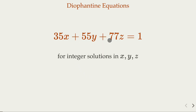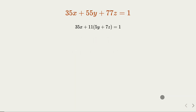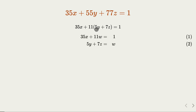Now let's go back to our problem with three variables and introduce three different methods. In the first method, we're going to split this into two equations. Looking at the equation, we can rearrange it — there's a common factor of 11 here. Since the three numbers are co-prime, it has infinitely many solutions. We introduce an integer w, splitting into: 35x + 11w = 1, and 5y + 7z = w.